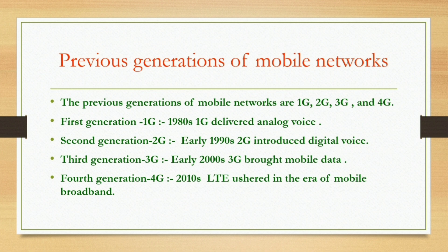The second generation, 2G, came in the early 1990s and was used for digital voice. Then we had 3G in the early 2000s — 3G mobile data connected us to the internet. After that we had 4G, the 4th generation network.